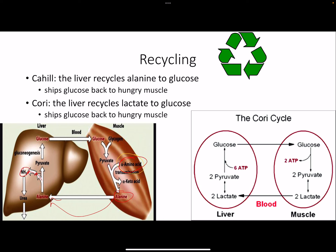That is the Cahill cycle. It's very analogous to the Cori cycle. In the Cori cycle: glucose makes pyruvate during anaerobic respiration, lactic acid fermentation produces lactate, lactate goes through the blood, gluconeogenesis makes glucose back, and it gets sent back. The Cori cycle is very similar to the Cahill cycle, but the Cahill cycle is the only one relevant for nitrogen transport.